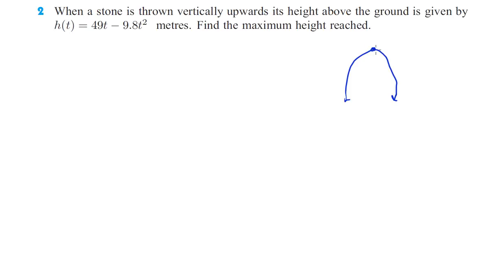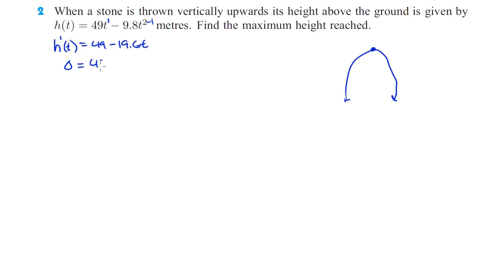Since we're looking for the maximum height, that's actually going to be the Y, not the X. The X gives us how long it takes to get there, and the Y gives us the max height. We can still find this by finding the derivative. So H prime of T: that's T to the first, so that's just 49, and then 2 times negative 9.8 is negative 19.6 — subtract 1, and that's 19.6T. Again, since it's the maximum, the tangent has to equal zero, so 0 equals 49 minus 19.6T.